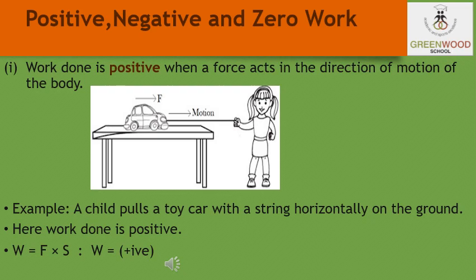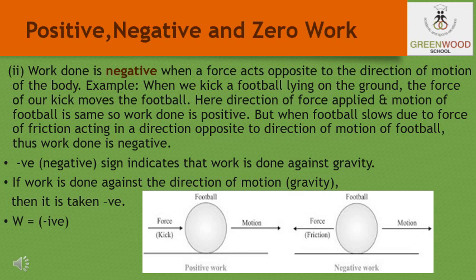When the force F and the displacement S are in opposite directions — that is, the angle between the direction of force and displacement is 180 degrees — the work done will be negative, meaning work is done against the force. For example, frictional force acts in the direction opposite to displacement, so work done by friction is negative. When you kick a football, it slows down due to friction acting in the opposite direction of motion. The negative sign indicates that work is done against the direction of motion.